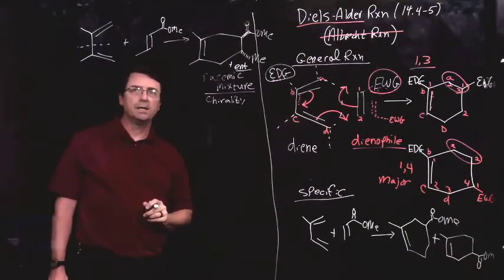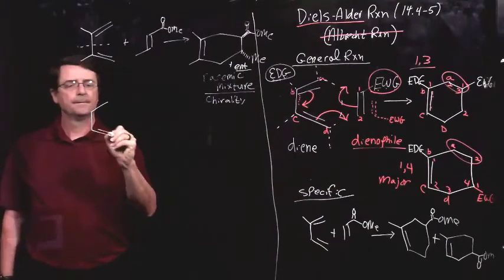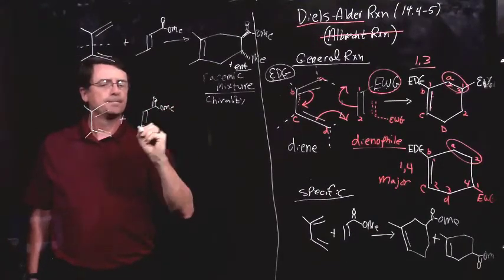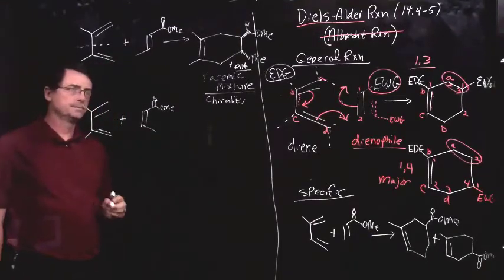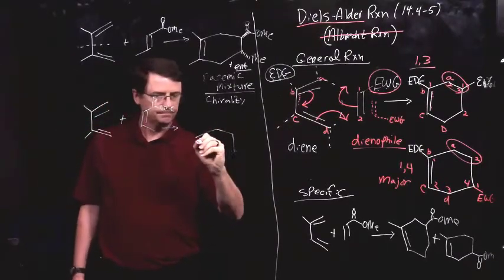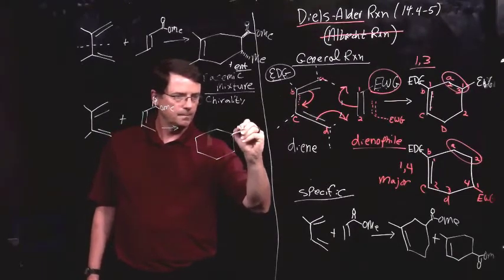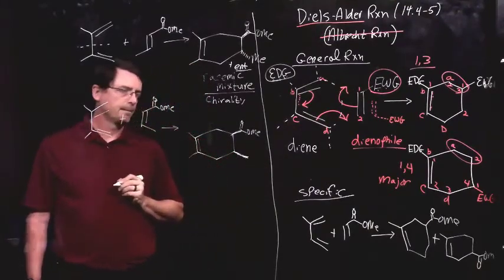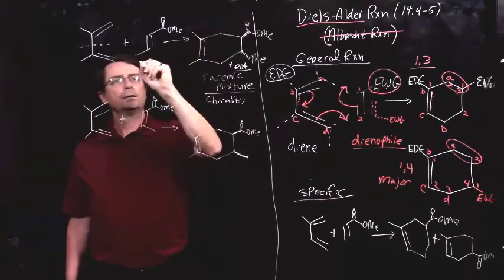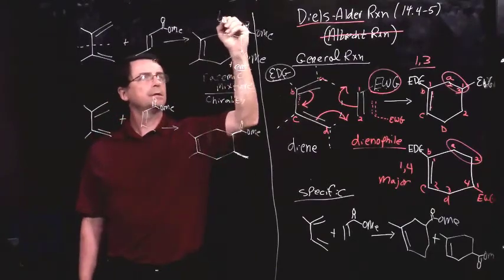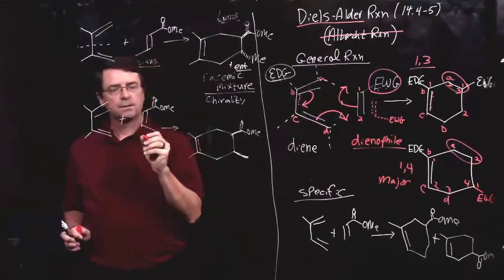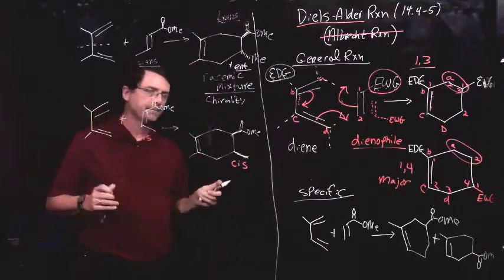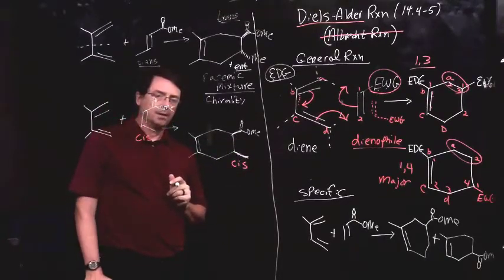Now, there's one other piece of information that we need here. If we take the same diene and we react it with the other stereochemistry of this ester, we get a different product. Whereas here, the trans-relationship in the starting material translated to a trans-relationship in the product, in this dienophile, the cis-relationship translates to a cis-relationship of the stereochemistry in the product. Okay?